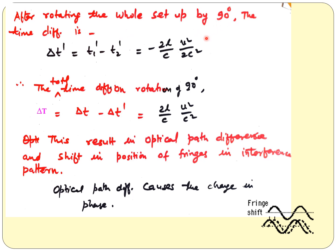When the whole setup is rotated by 90 degrees, the time difference reverses sign because the vertical mirror becomes horizontal and vice versa. The time difference after rotation is ΔT′ = −(2L/C)(V²/2C²). The total time difference over the full 90-degree rotation is capital ΔT = ΔT₁ − ΔT′ = (2L/C)(V²/C²) when adding the two terms.